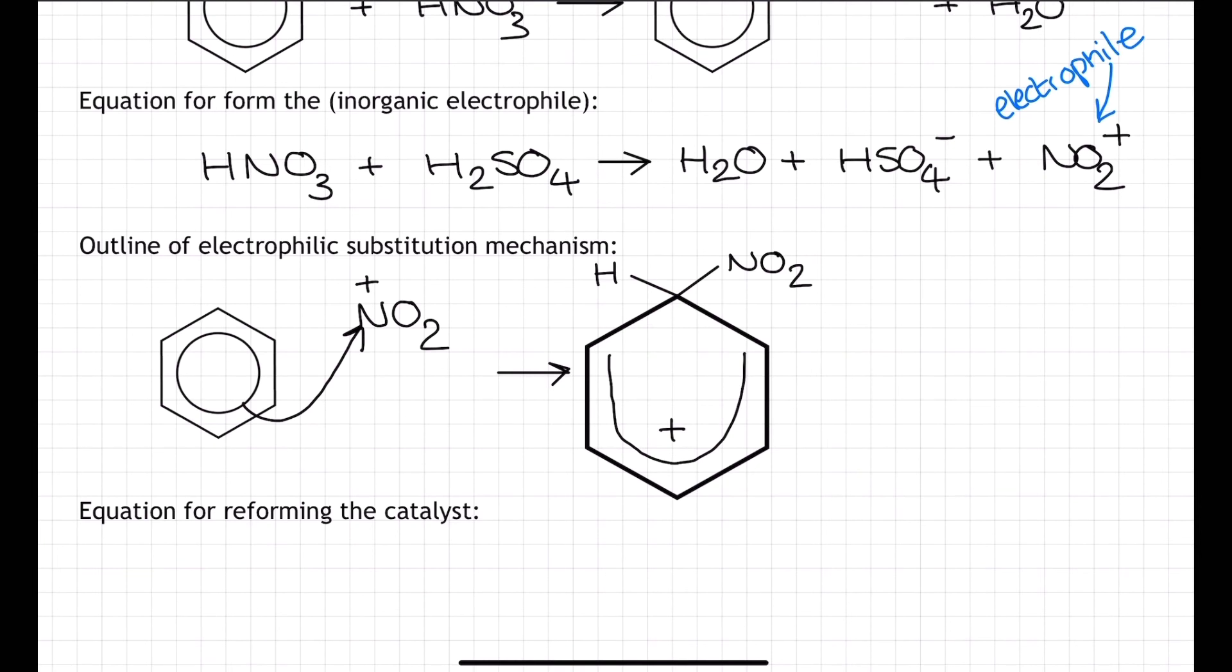To restore the delocalized pi system, an H plus ion is removed by the HSO4 minus, which we saw formed when we were generating the NO2 plus electrophile. And a curly arrow shows the movement of an electron pair towards the positive charge at the core of our unstable intermediate. We don't need to show the HSO4 minus as a part of the mechanism. The product is nitrobenzene. Where there once was a hydrogen on our benzene structure at the very start of all of this, there is now an NO2 group. And alongside this, we demonstrate the formation of an H plus ion.